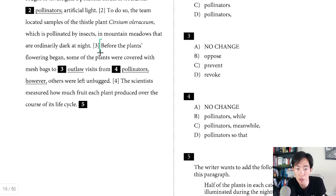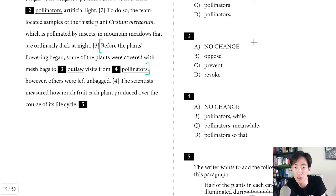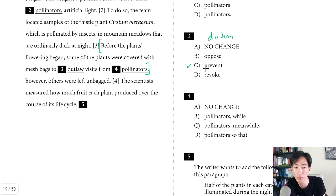Question three. Starting right here: 'Before the plants' flowering began, some of the plants were covered with mesh bags to outlaw visits from pollinators.' You should immediately realize that 'outlaw' is not a good word choice — this is a diction problem. Diction means word choice. 'Outlaw' specifically means to make something illegal, which is obviously not what's happening here. Glancing at the answers, you should immediately zoom into the word 'prevent' — we want to stop the visits from the pollinators by covering them with mesh bags.